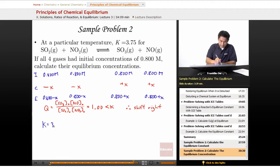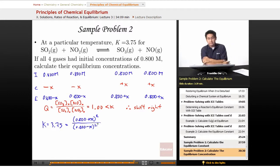So K is equal to 3.75. And that's equal to 0.800 plus X squared, divided by 0.800 minus X squared. So we can use what we call a perfect squares to solve for this. And so the square root of both sides is what we're going to do next.